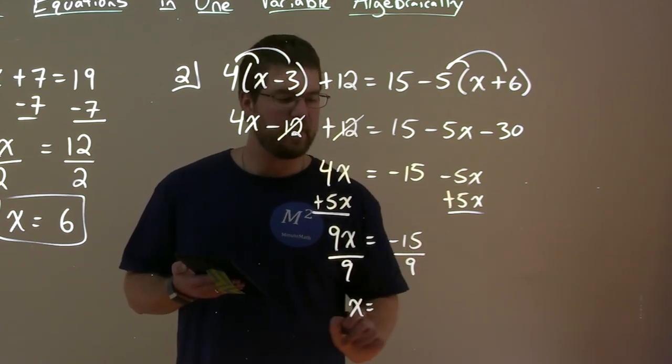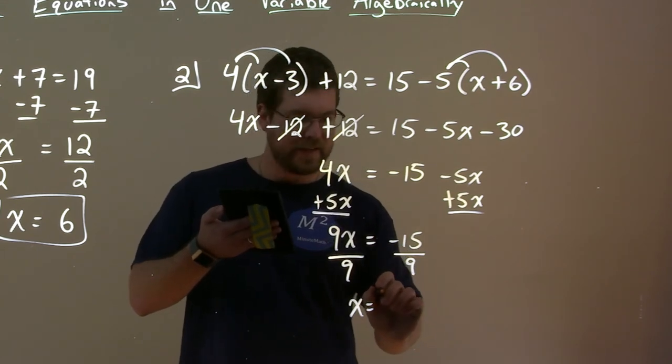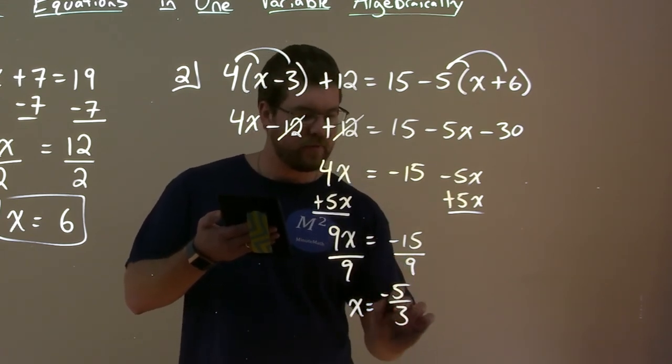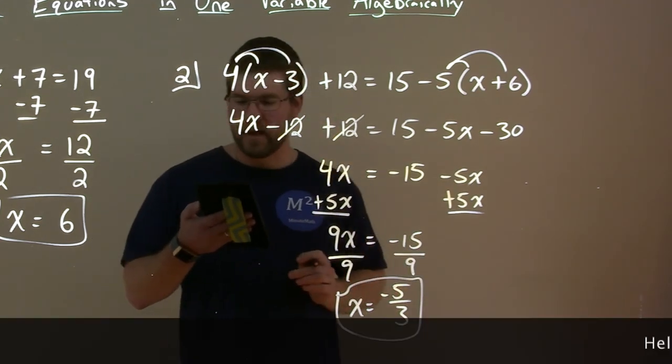And we're left with x by itself equals negative 15 over 9, which simplifies to be negative 5 thirds. We can divide both of them by 3. And there we have x equals negative 5 thirds.